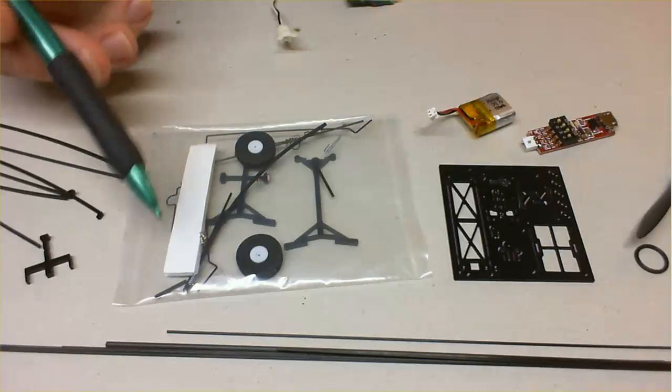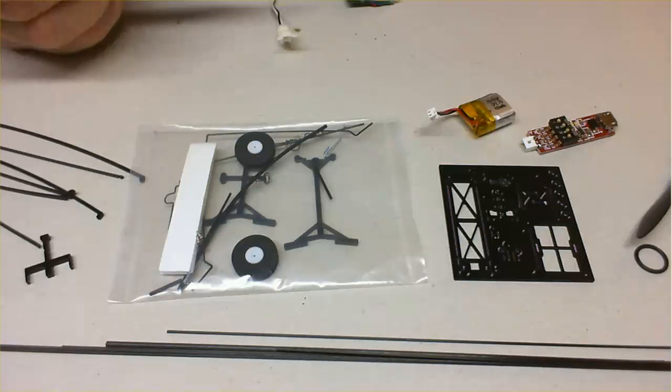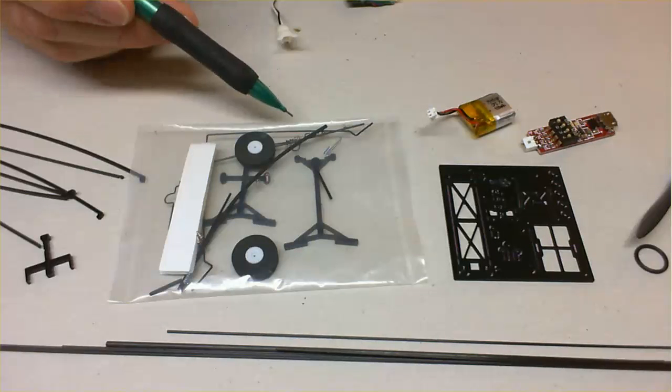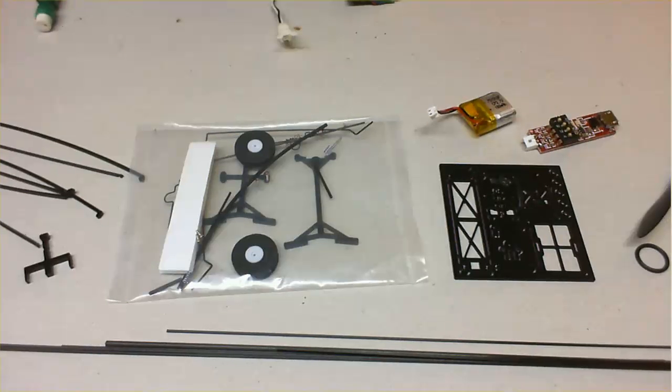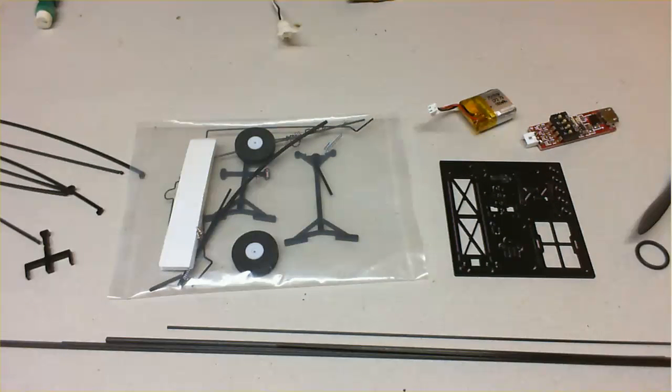You can see we've got control linkages here. These ones here are control linkages for both ends of the control rods. And there's various other parts. Okay, so that's the small components of the kit. And we'll take a look at the airframe itself.